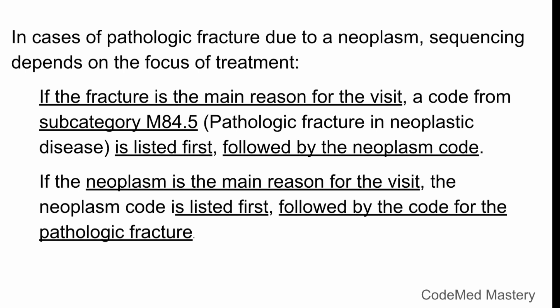Next, in cases of a pathologic fracture due to neoplasm, sequencing depends on the focus of treatment. If the fracture is the main reason for the visit, code M84.5 — pathologic fracture in neoplastic disease — will be listed first, followed by the neoplasm code. If the neoplasm is the main reason for the visit, the neoplasm will be listed first, followed by the code for the pathologic fracture. You have to focus on what is the main reason for the visit to sequence neoplasm correctly.